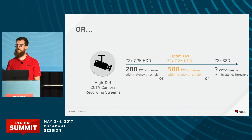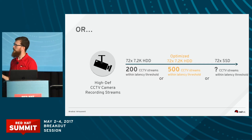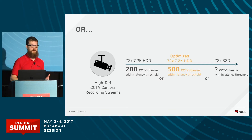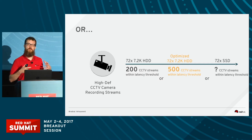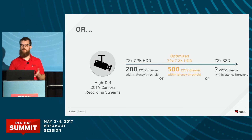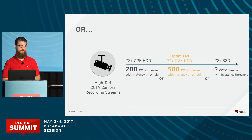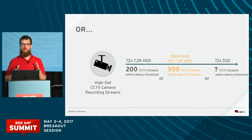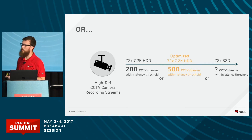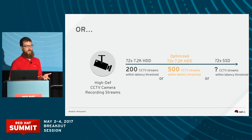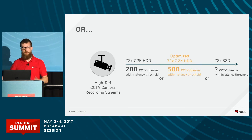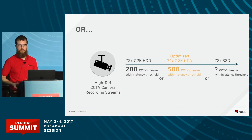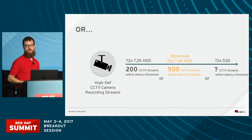Our third example is a real-world workload — something we studied was a CCTV workload. Again, with no real configuration effort put in, we can get 200 concurrent CCTV streams on that same set of servers. Or we can configure to that workload, architect appropriately, and more than double the capacity of the system.